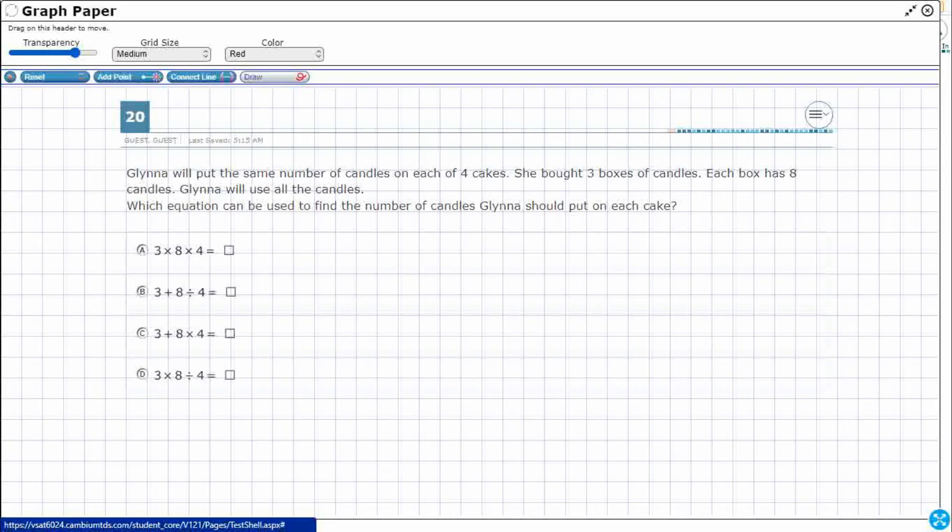Glenna will put the same number of candles in each of four cakes. So when we see same number, our brain should be shouting equal groups. Sometimes they'll say just the same number, sometimes they'll actually give you the number. When you see equal groups, that means we are dealing with multiplication or division or possibly even both. So that's a clue for us.